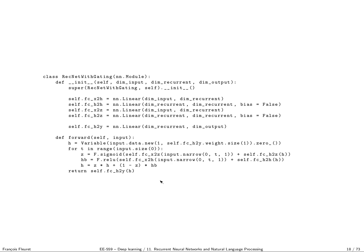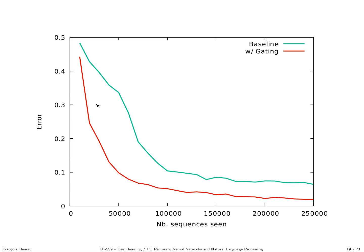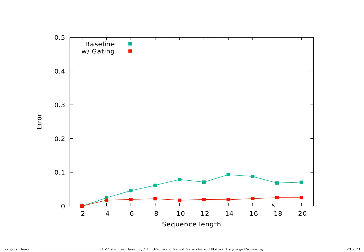With gating, keeping the same number of parameters, we strongly reduce the error rate. Multiple runs of the naive model often end up with very bad models — training is far more unstable without gating. Looking at error rate as a function of sequence length, the gated model shows much better behavior and does not collapse catastrophically, even for longer sequences.